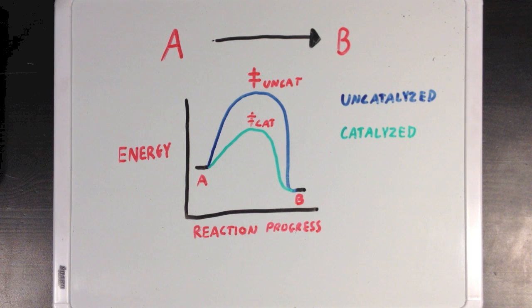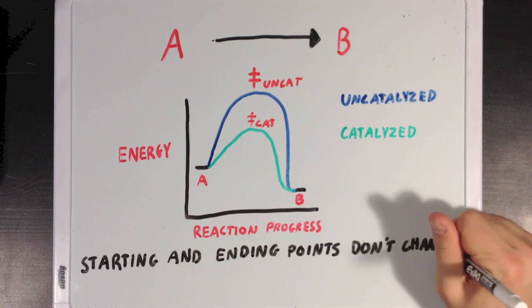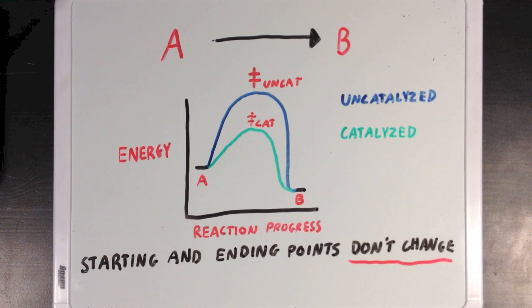Now it's really important to recognize that like our example where you're trying to climb the hill, the enzyme will not be changing the starting and ending points of the reaction. It doesn't change molecule A or molecule B. Your starting and ending points are always the same, and the only thing that changes is the path that you take to get from A to B.